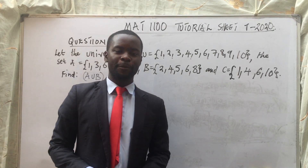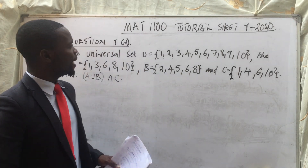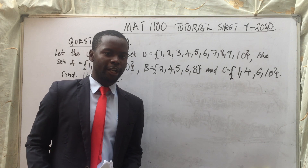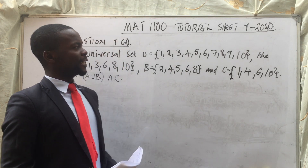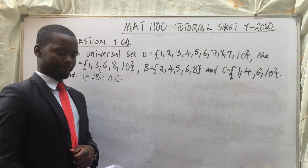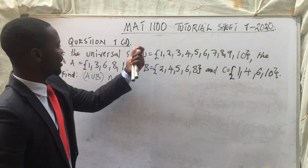Yes, this is Sam Levener. In this video, we are going to calculate Math 1100 Tross Sheet 1, Question 1D — the Tross Sheet 420, Question 1D.